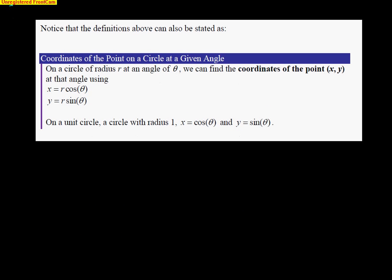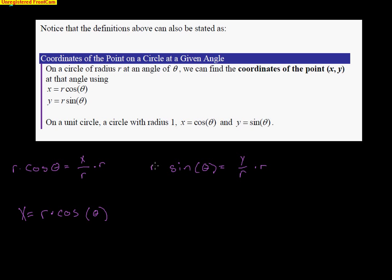Another way to look at these formulas: since cosine of theta equals x over r, if I multiply both sides by r, I find that x equals r times cosine of theta. Similarly, sine of theta equals y over r, so multiplying both sides by r gives y equals r times sine of theta. On the unit circle — a circle with radius 1 — r equals 1, so x is simply cosine and y is simply sine, making calculations simpler.